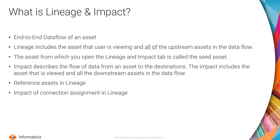What is Lineage and Impact? Lineage and Impact describes the end-to-end data flow for an asset. The data flow for an asset has two components: the Lineage and the Impact. Lineage describes the flow of data from the origins to an asset. It shows you where the data for an asset comes from and which assets affect the asset currently being viewed. When you view an asset in a Lineage and Impact diagram, the Lineage includes the asset you are viewing and all upstream assets in the data flow.